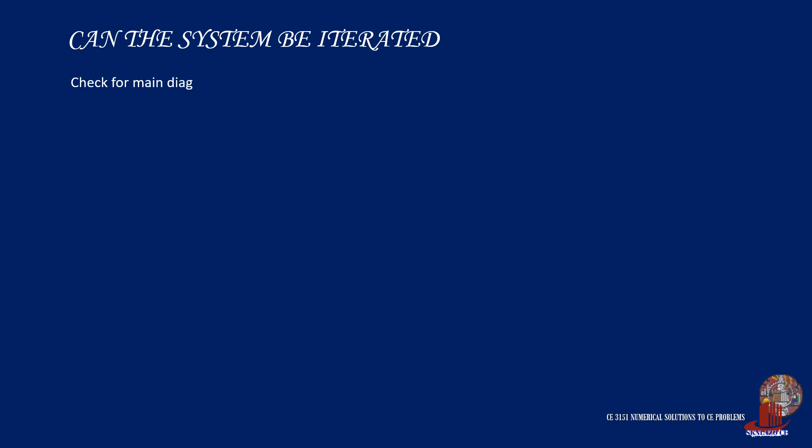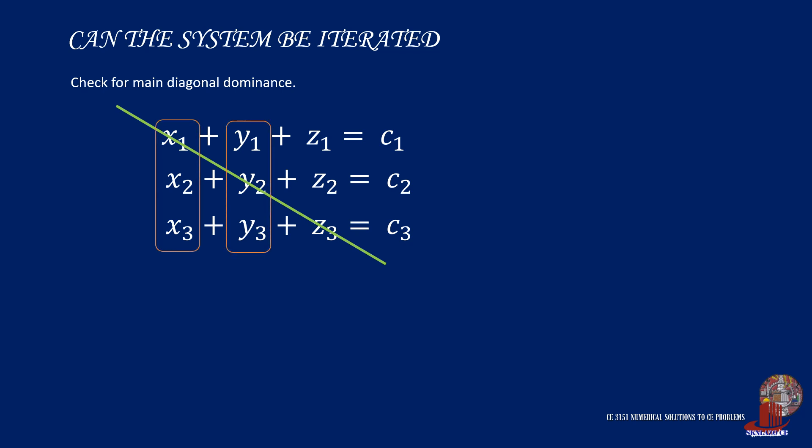The check for iteration is done in a two-step process. First is the check for the main diagonal dominance. Remember that the main diagonal starts from element a₁₁, which continues to element a₂₂, and ends with element aₙₙ. One can jumble the order of equations from here. Then, the next step is again to check for the coefficient of each equation.